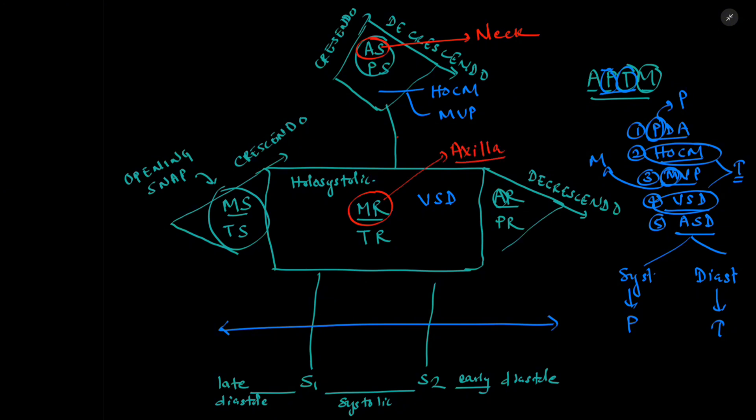And one more thing that we must remember is that if the murmur is from the defect in the right side of the heart, it would increase in intensity with inspiration. So pulmonic stenosis and pulmonic regurgitation, tricuspid regurgitation, tricuspid stenosis, the murmurs of these defects will increase. So we are done with our murmur man.